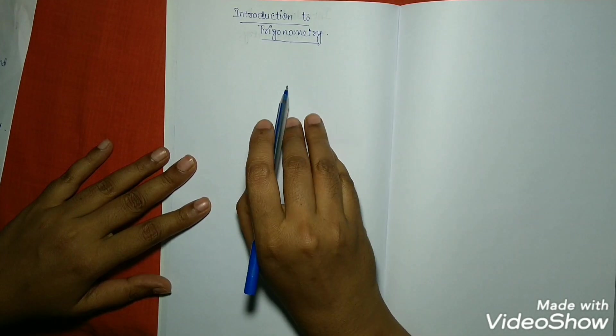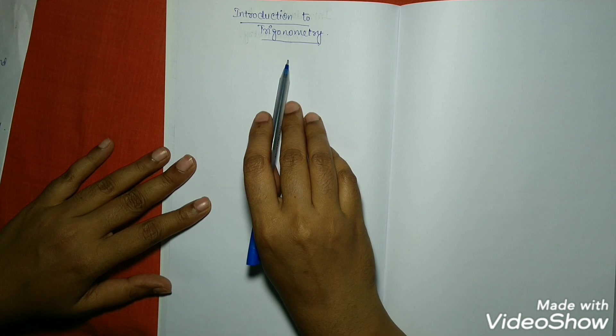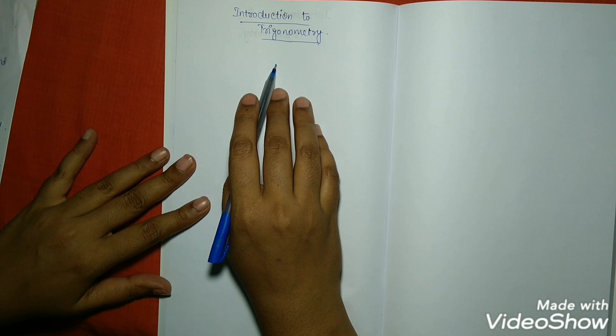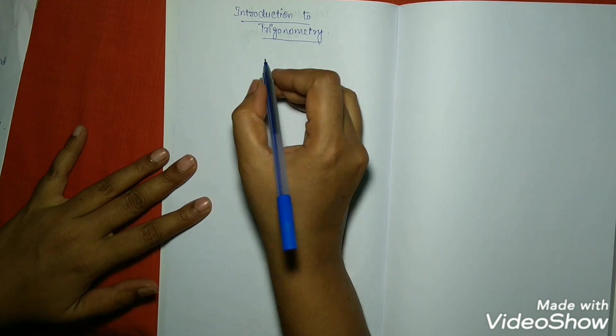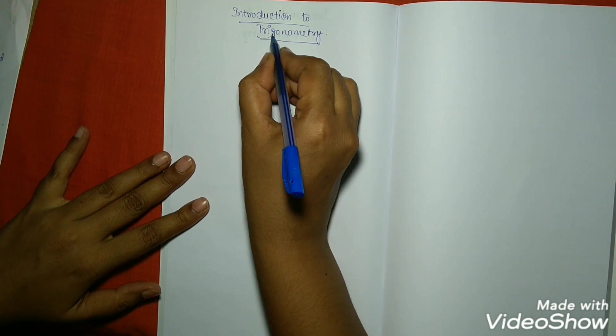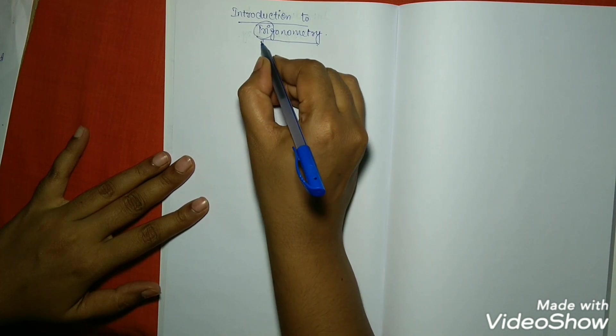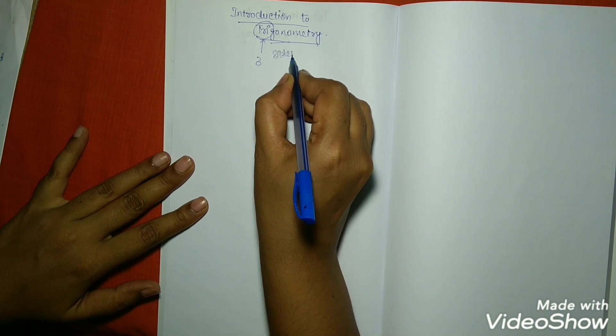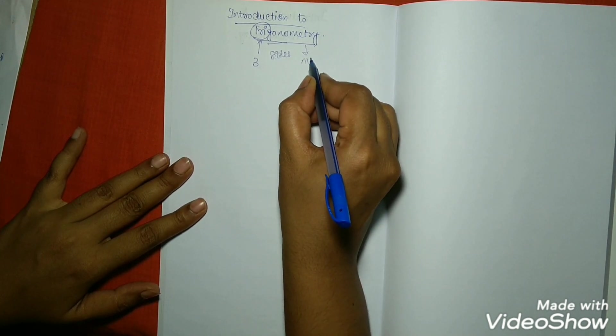Today we are going to see introduction to trigonometry. Trigonometry is a branch of mathematics where it deals with the triangles. Trigonometry is the term taken from Greek. Tri means three, gono means sides, and metri means calculation, that is measurement.